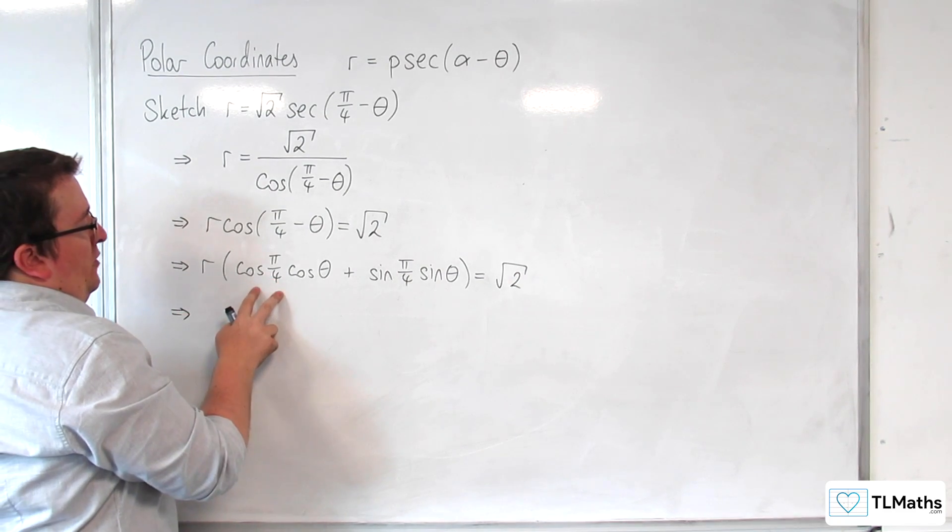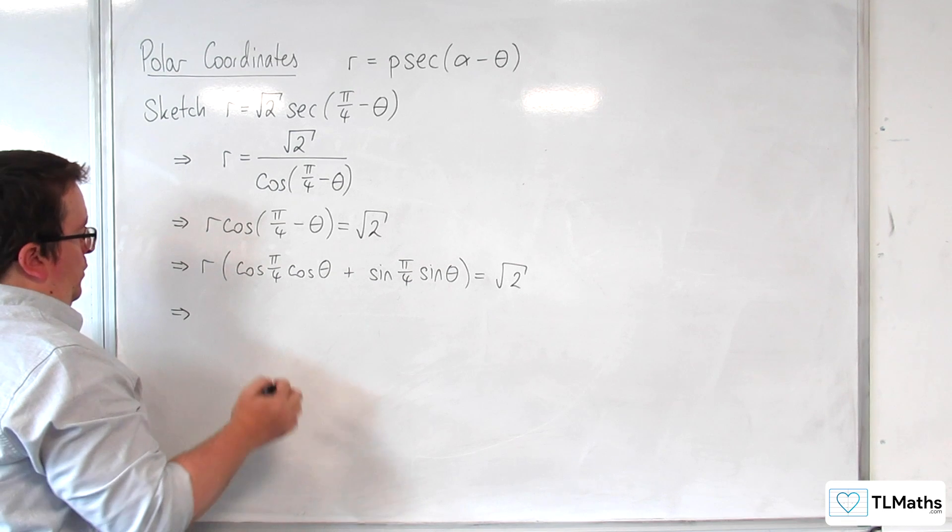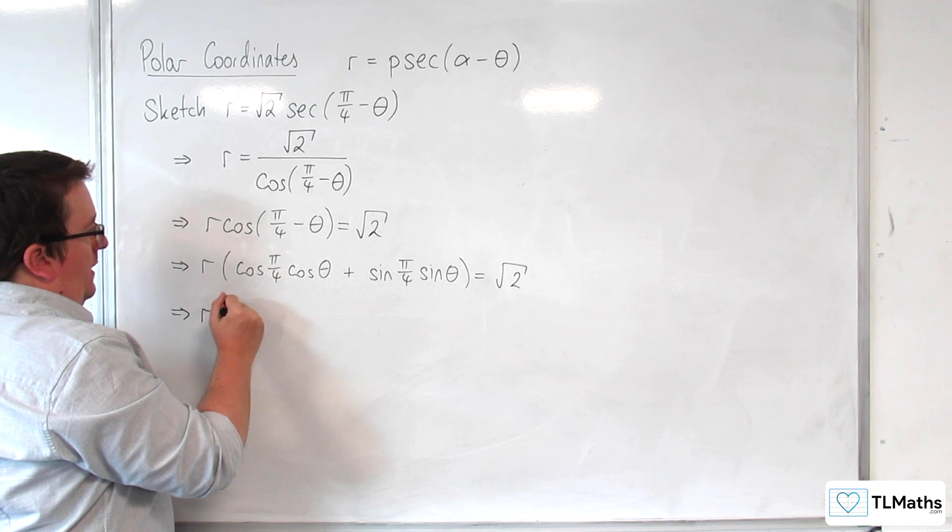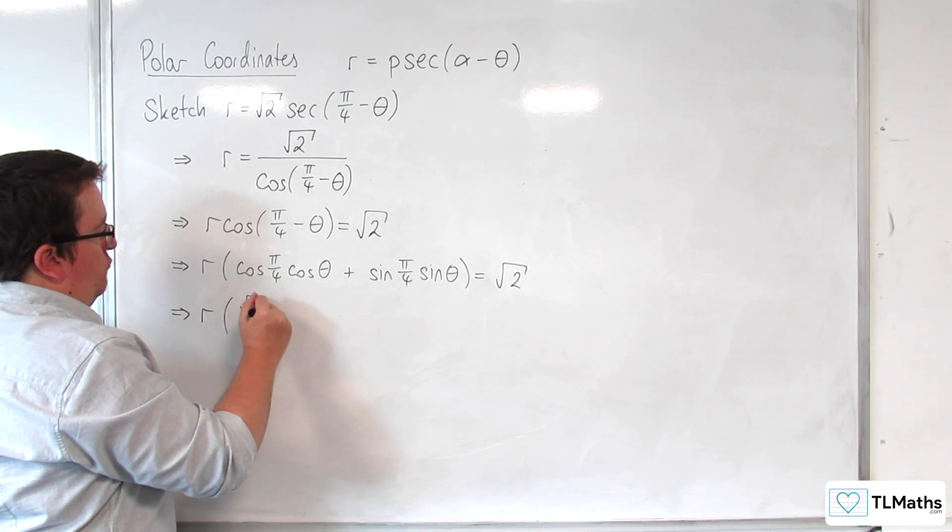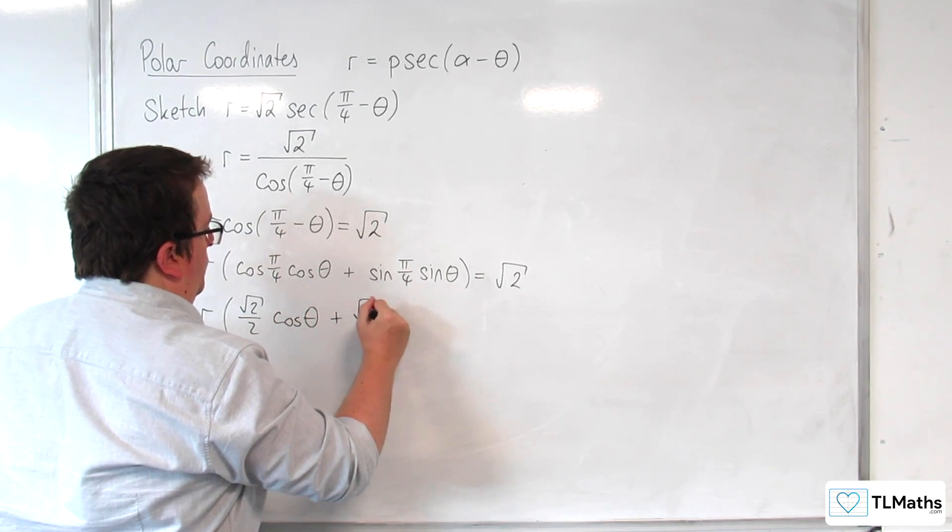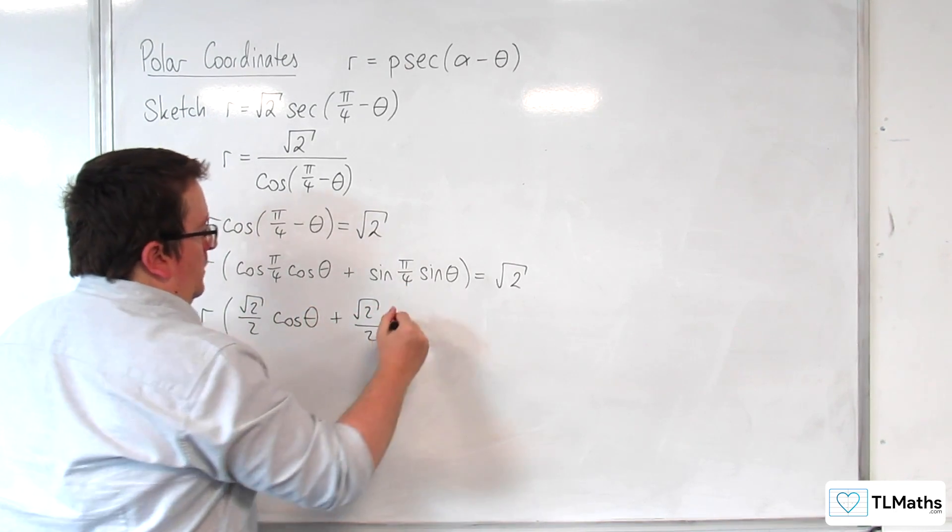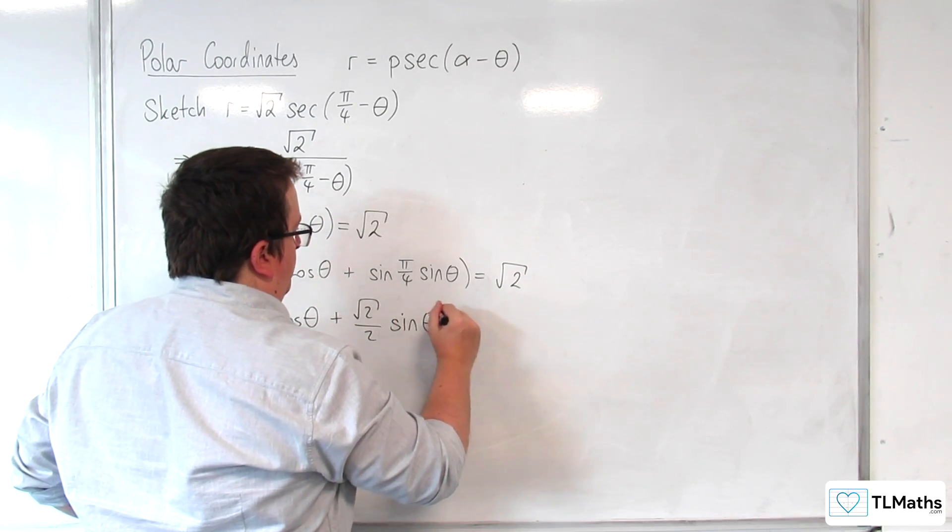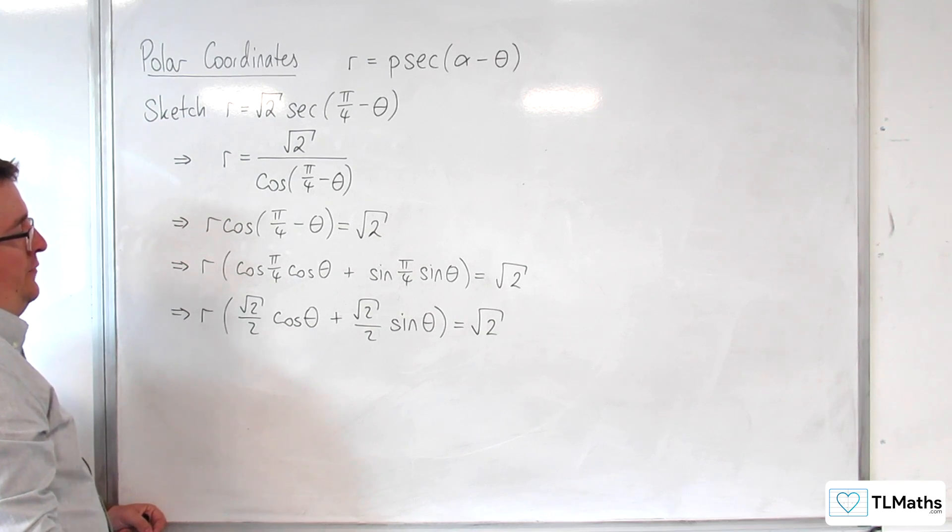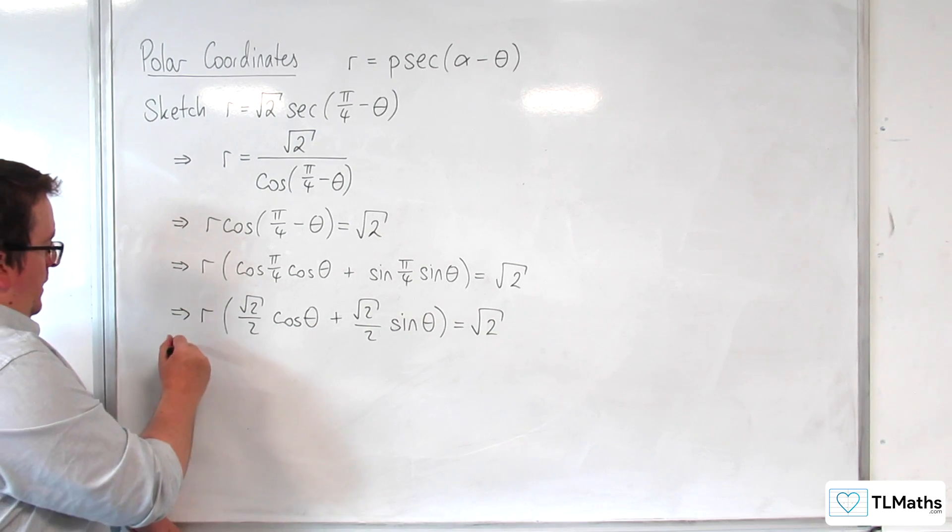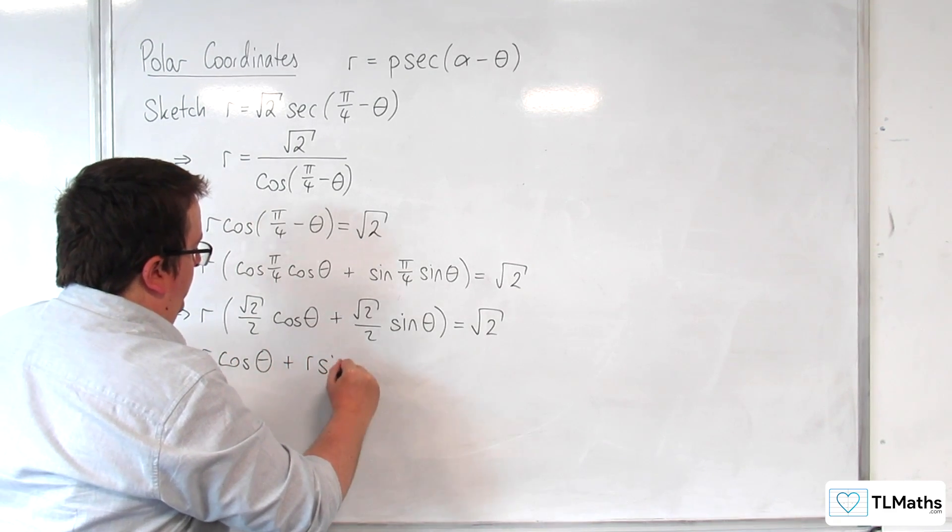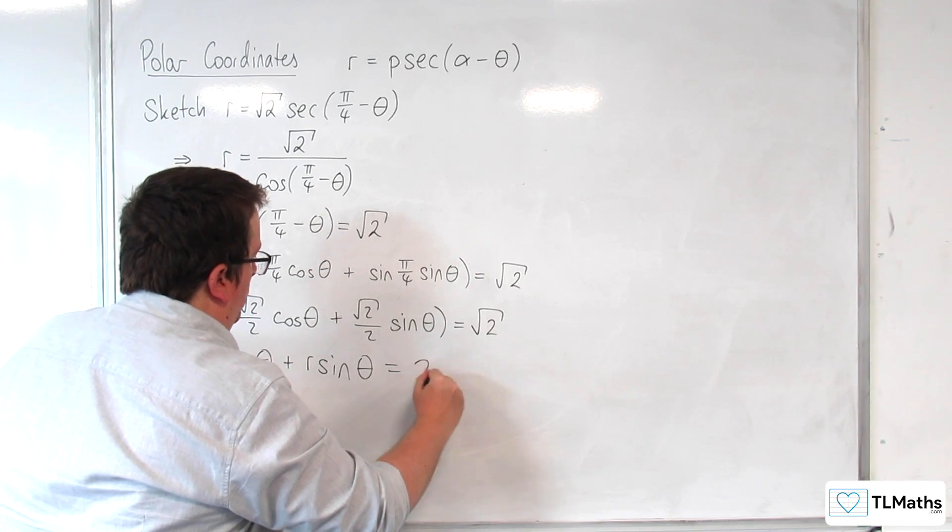Now cosine pi over 4 is root 2 over 2. So let's write that first: r times root 2 over 2 cosine theta plus, and that's root 2 over 2 as well, sine theta equals root 2. So let's divide through by root 2 and multiply through by 2. We're going to get r cosine theta plus r sine theta is equal to 2.